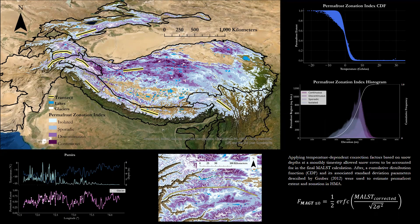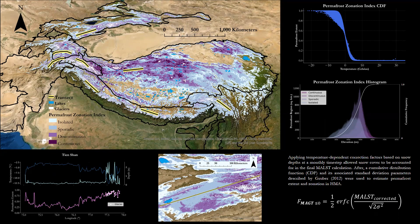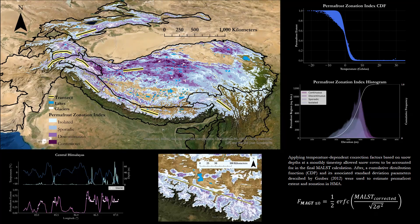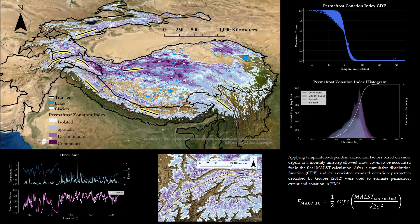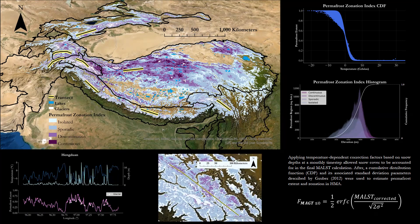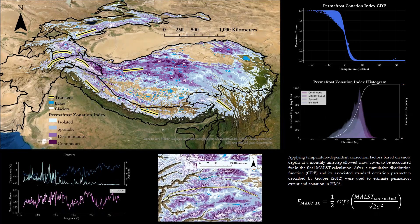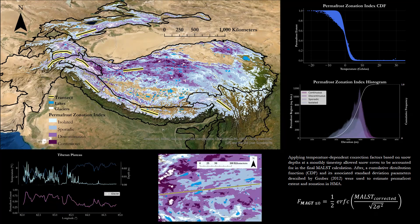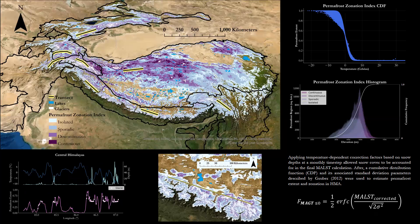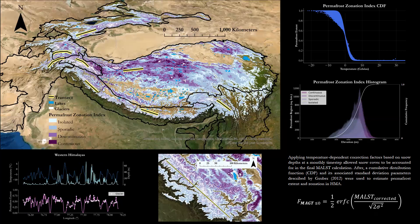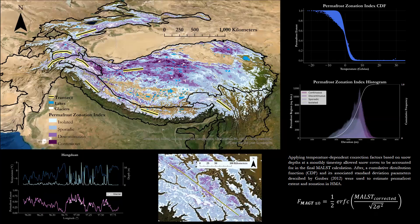The cumulative distribution function is plotted in the upper right, in which lower temperatures are associated with a greater likelihood of permafrost extent, and higher temperatures with lower likelihoods. The middle-right plot shows a histogram and cumulative frequency at which permafrost, based on the four zones, is present according to elevation. Isolated accounts for permafrost extents below 10%, sporadic between 10% to 50%, discontinuous between 50% to 90%, and continuous permafrost zones above 90%. The transects below show agreement between areas where lower ground surface temperatures coincide with greater snow cover. While these are estimates, this work will hopefully inform scientists about where permafrost is at most risk of thaw and help target areas for in-situ research.